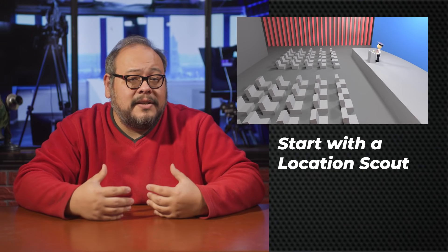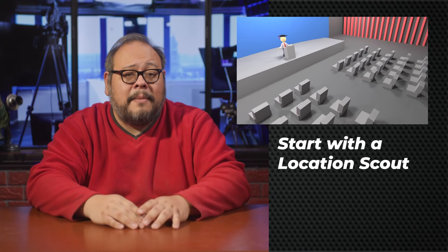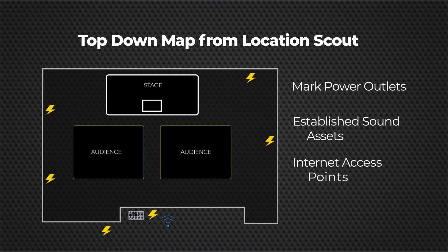So, backing up — let's talk about the big question: what is it that I want to see on the stream? In my conference example, what part do I need to focus on? Is the presenter at a podium? Will they be walking around a stage? Is there a Q&A section where I need audience questions on camera? Once you have a sense of what you want on screen, it's time to do a location scout. From that scout, draw a top-down map of the space and make note of power outlets, sound assets, internet access, and available lighting.